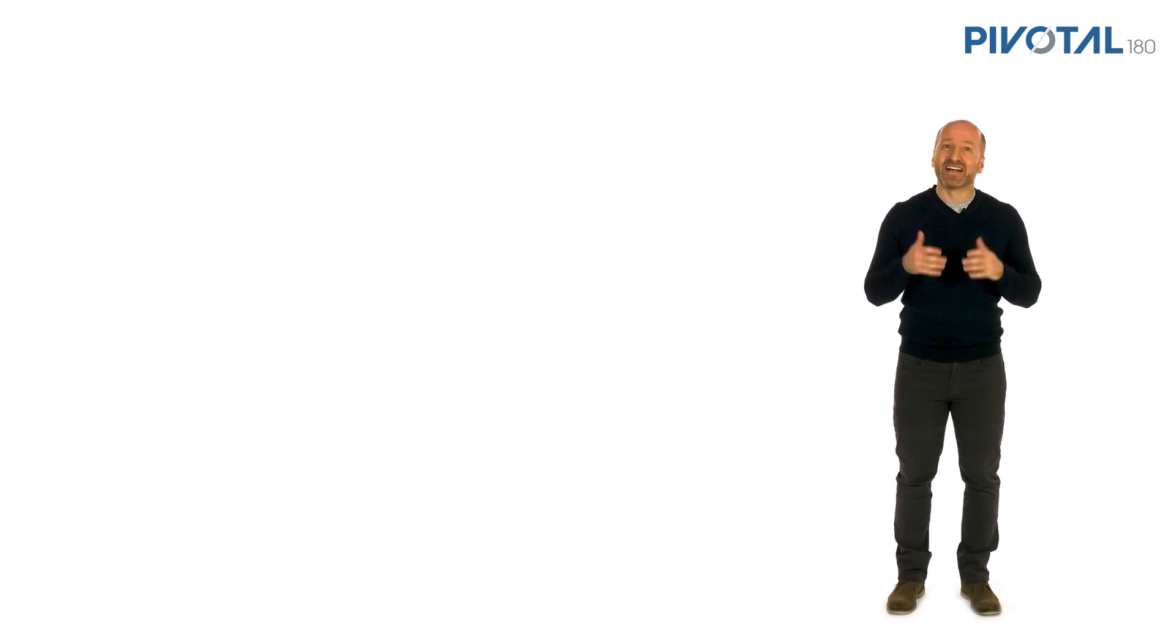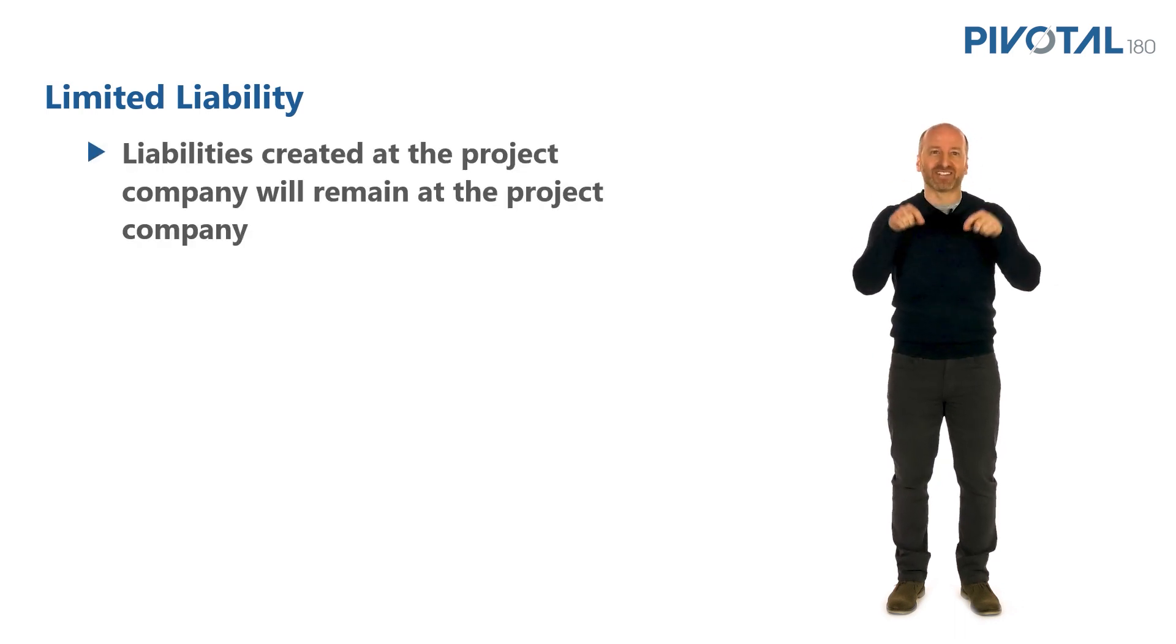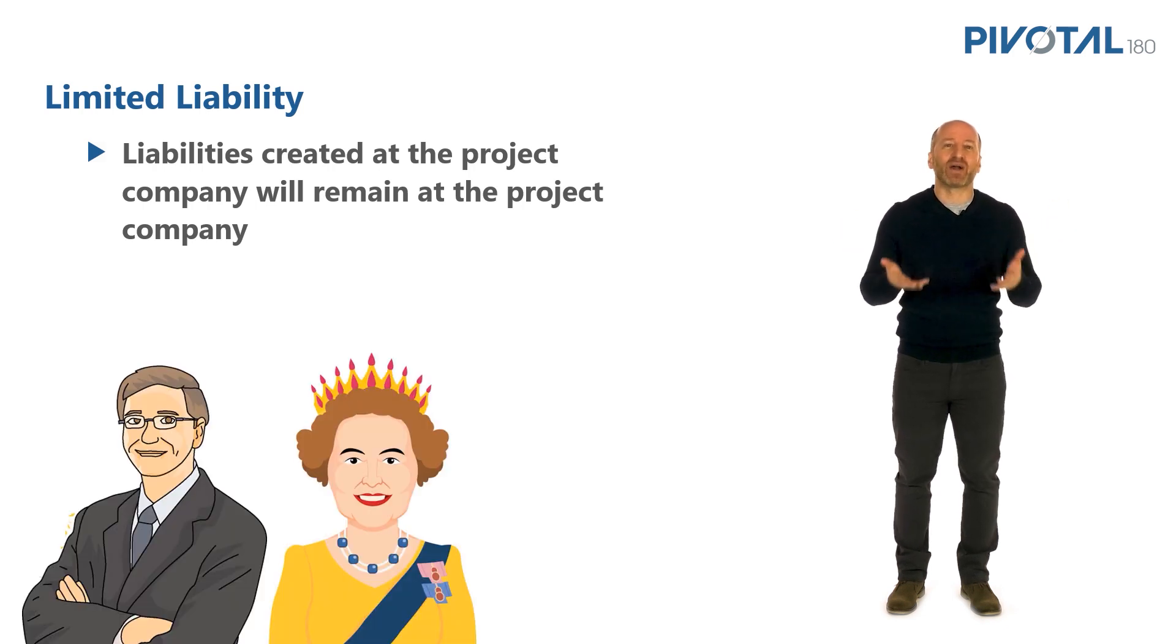Finally, there's a concept of limited liability. So, just like the loans to the project company are non-recourse, any other liabilities that are created at the project company need to stay at the project company. So, a lawsuit, for example, would remain at the project company level, and it would not come back to harm Bill Gates and the Queen of England if they just so happened to be the owners of that project company. Well, that's assuming that they had the good sense to create the right form of legal entities to that project and that they structured everything correctly from the beginning, but we'll get to that in the next module.